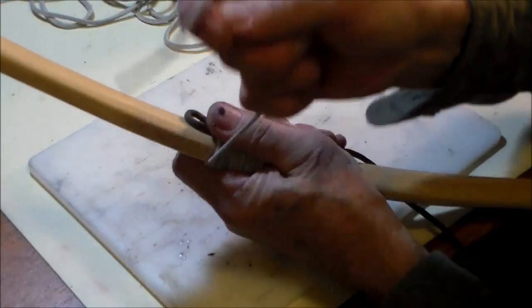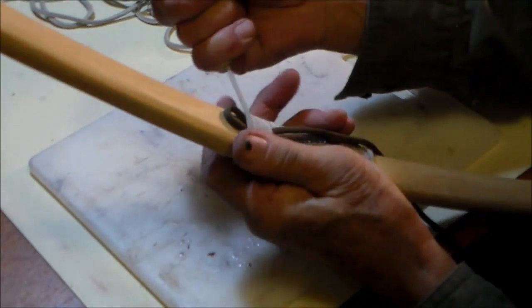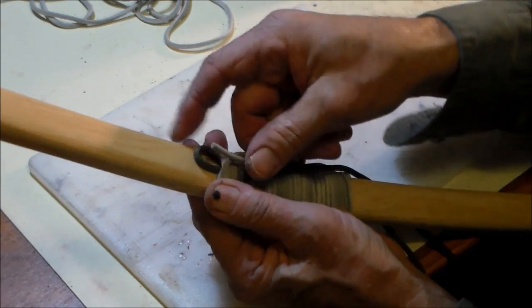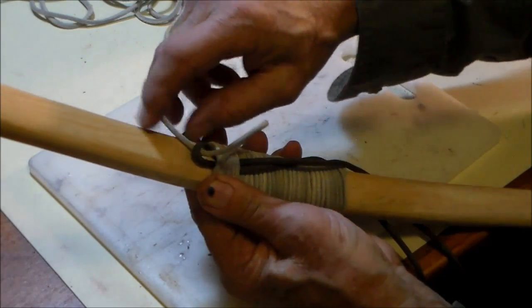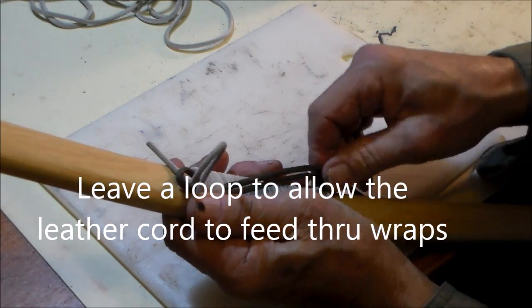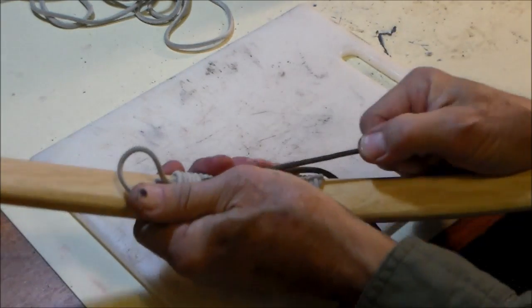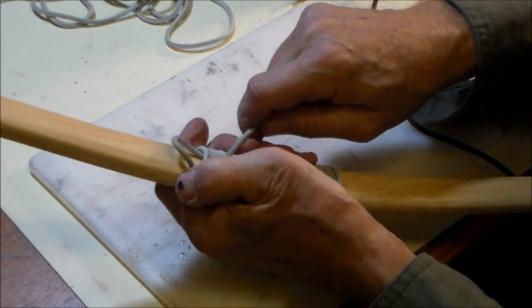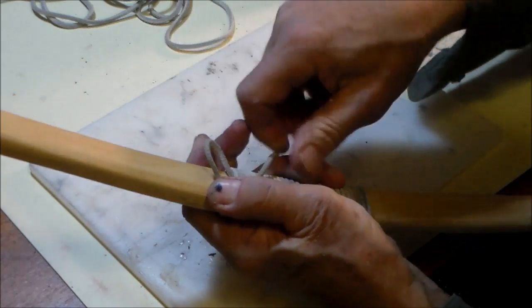These last ones I'm not pulling as tight as the beginning wraps. Now feed the tag in through. Leave a little bit of gap and pull that through. That's why we left the gap. Now we can pull this snug.